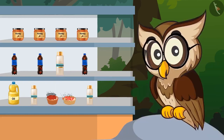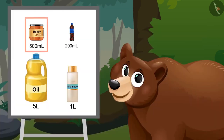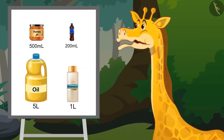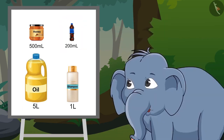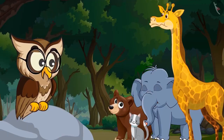Can you match all these liquids with their right amount? Bottle of honey is 500 ml. Bottle of cold drink is 200 ml. Bottle of oil is 5 liters. Bottle of shampoo is 1 liter. Exactly.